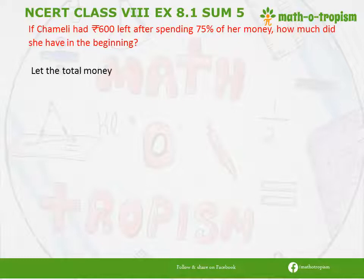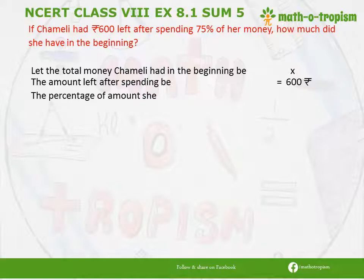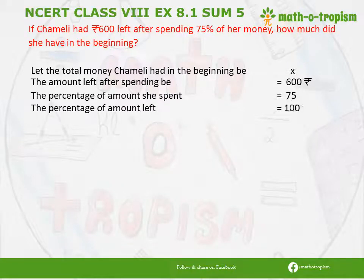Let us take the amount she had in the beginning as X. We know that the amount left after spending is Rs. 600. Taking percentages, we know the amount spent is 75% and percentages are out of 100. So out of a total of 100, she spent 75. The percentage of amount left means 100 minus 75, which equals 25.